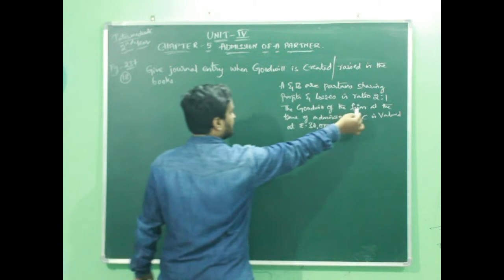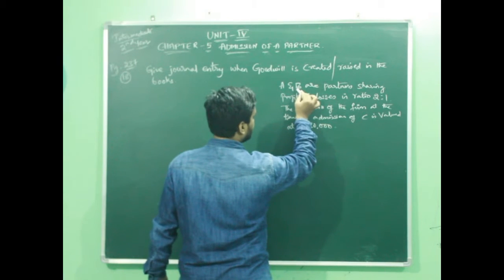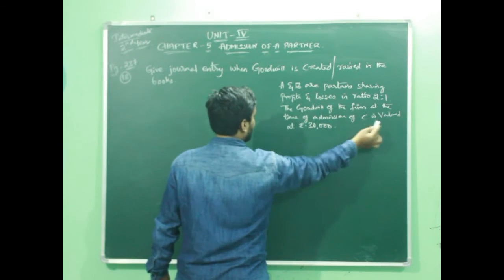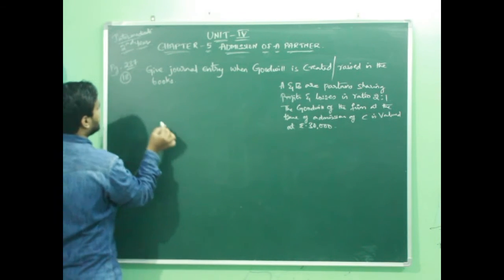The goodwill of the firm at the time of admission of C, when a new partner is joining the business, the goodwill of the firm is valued at 30,000. For this, you have to pass a general entry.